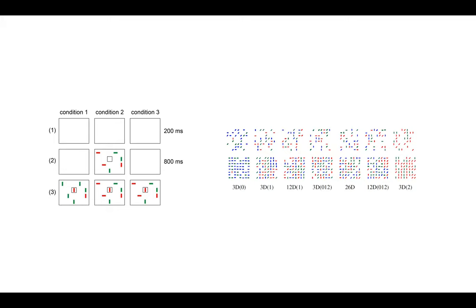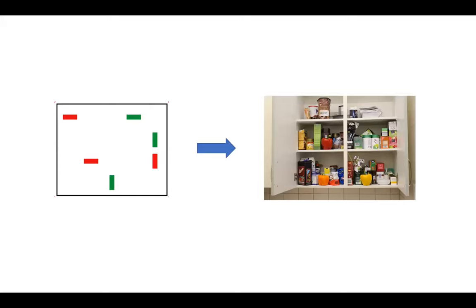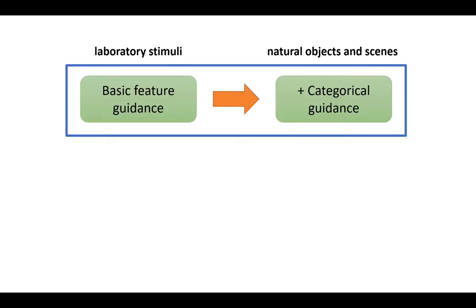These previous models were limited to classical laboratory stimuli that probably everyone in psychology knows. The goal was to understand the neural processes that enable the human brain to find categorically defined objects in natural scenes. It's quite easy to find a red vertical rectangle, but it can be quite tedious to find, for example, an orange paprika, depending on the structure of the scene. Unfortunately, there is little known on how humans guide visual search for categorically defined targets in natural scenes.